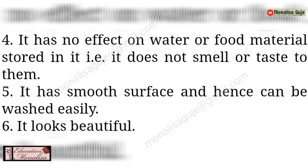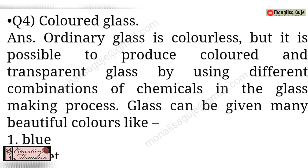The last important property is that glass looks beautiful. Now let's move to question number four: colored glass. Ordinary glass is colorless - simple and transparent. But it is possible to produce colored and transparent glass by using different combinations of chemicals in the glass-making process. White sand, lime and soda make transparent glass, but if we want colored glass, there is a different combination of chemicals. Using different chemicals, we can make colorful glass.